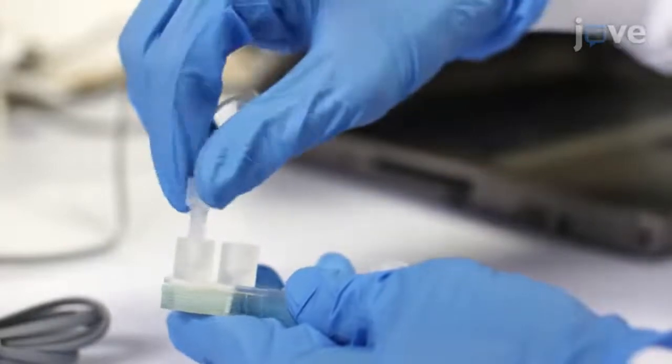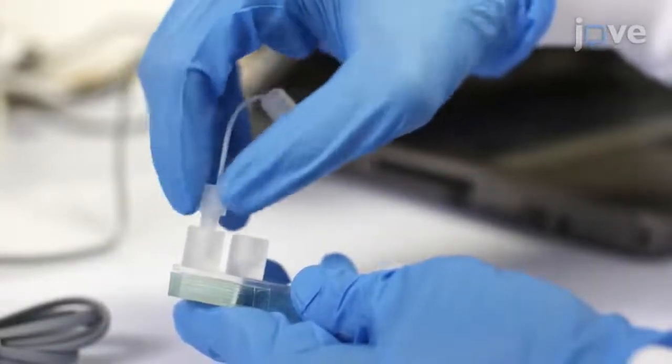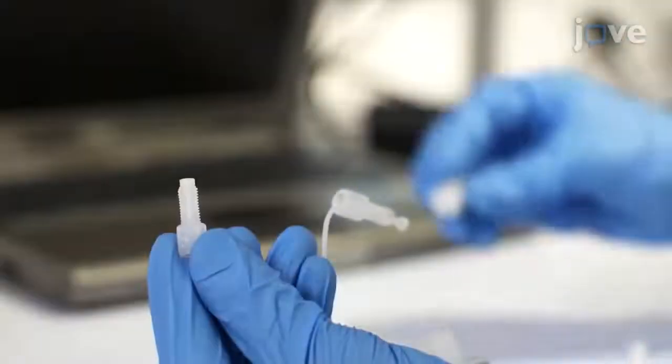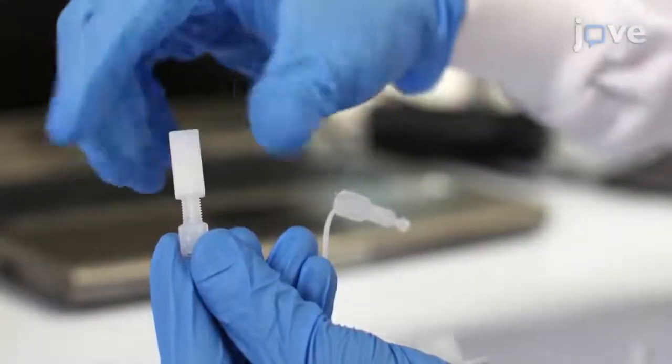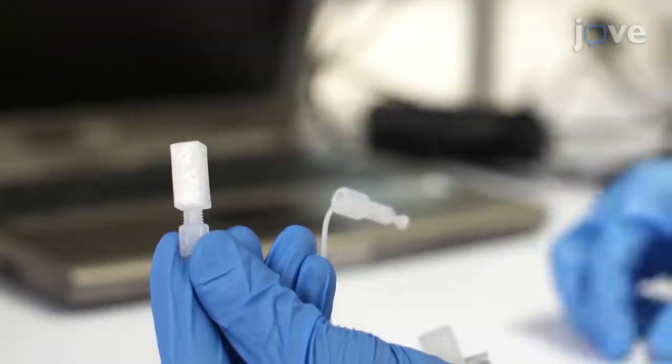To assemble the staggered herringbone micromixer microfluidic device, use a nut and ferrule to connect tubing to each of the inlets and outlets of the device. Then use a second nut and ferrule and a union assembly to convert the terminal of the tubing for both inlets to a female luer.